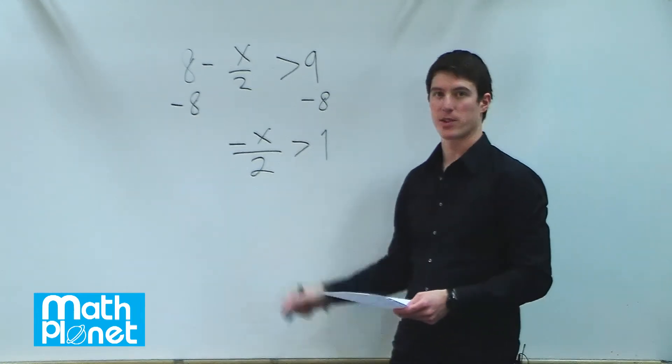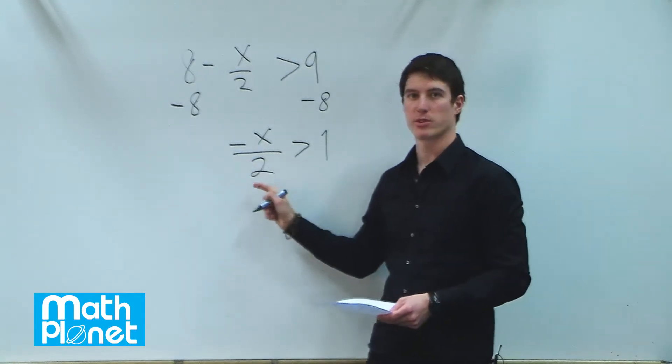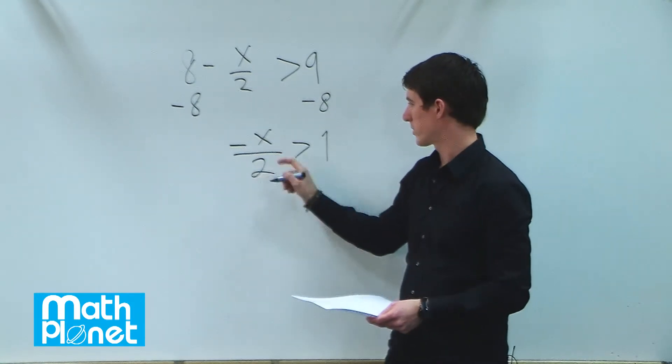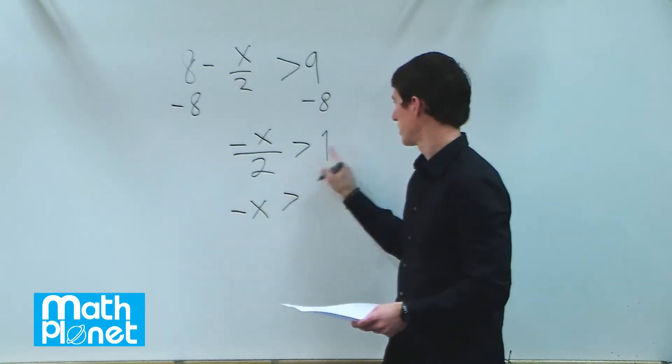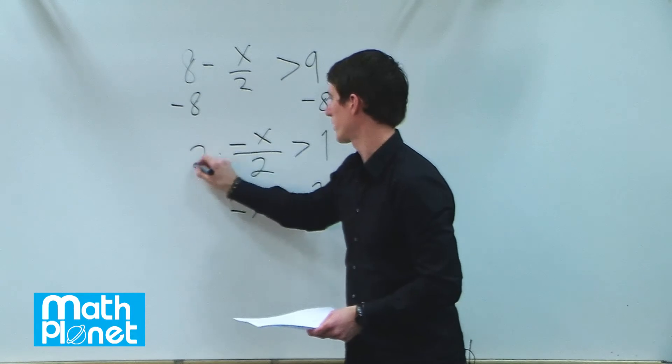Now we want to get the x by itself. First let's multiply by 2 to do the inverse of division. Multiplication is the inverse operation of division, so we'll get rid of this 2. We can say negative x is greater than 2 times 1, which is just 2.